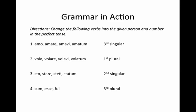All right, let's start with number one. We have amo, amare, amawi, amatam in the third person singular of the perfect tense. Remember, we're always going to go to that third principal part, amawi, drop our 'i' — that gives us our stem — and we're going to add our ending 'it.' Amawit is 'he, she, or it has loved.'